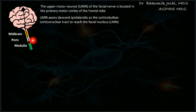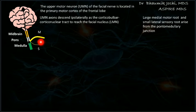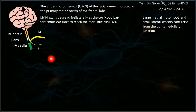At the pontomedullary junction arises the facial nerve. It has two roots: the motor root, which is larger and present medially, and the sensory root, which is smaller and present laterally. This sensory root is also called the nervus intermedius, because it is present intermedially between the larger motor root and the vestibulocochlear nerve.